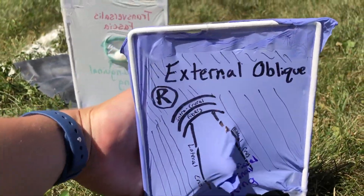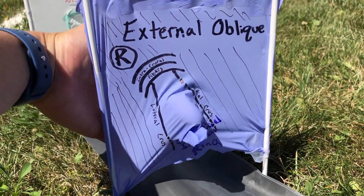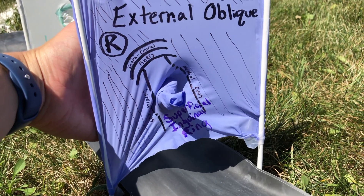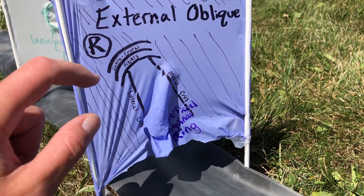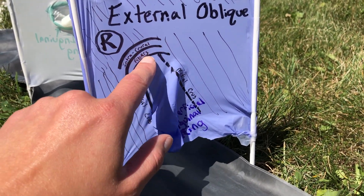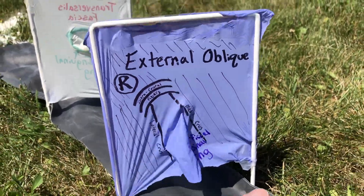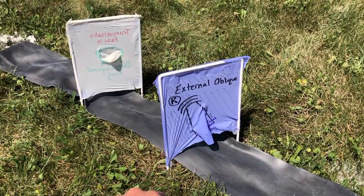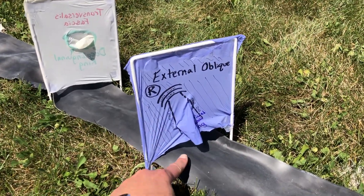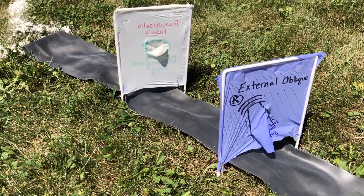Coming around to the front, this is the right external oblique with its fibers running to create the superficial inguinal ring, which is reinforced by the lateral crus, the medial crus, and the intercural fibers. This will continue on to the spermatic cord and down to the testes. The external oblique also wraps around to help stabilize the floor of the inguinal canal with the inguinal ligament.